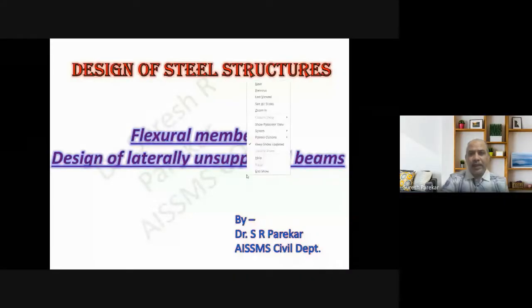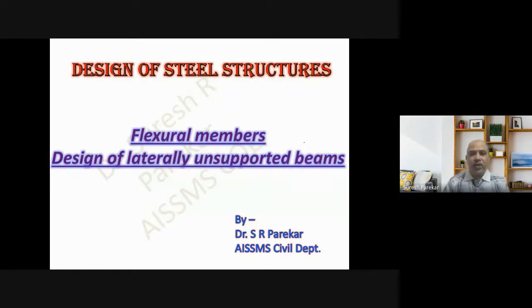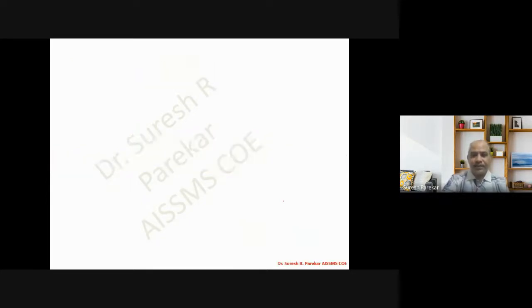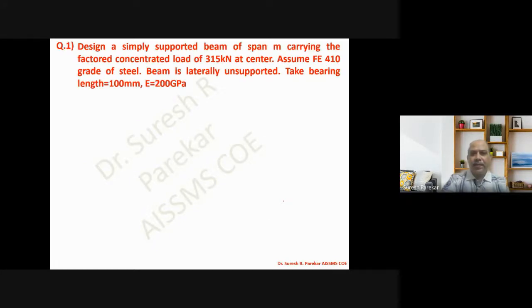Good evening. Today we are going to see a problem on laterally unsupported beams. We have seen problems of this type before, but now we are going to cover all the checks required while designing a laterally unsupported beam. In previous problems we only designed the member up to moment of resistance. Now we have to design a simply supported beam of span 6 meters carrying a concentrated load of 315 kilo-newton at center. Assume F410 grade of steel; beam is laterally unsupported, bearing length 100 mm, E = 200 GPa.